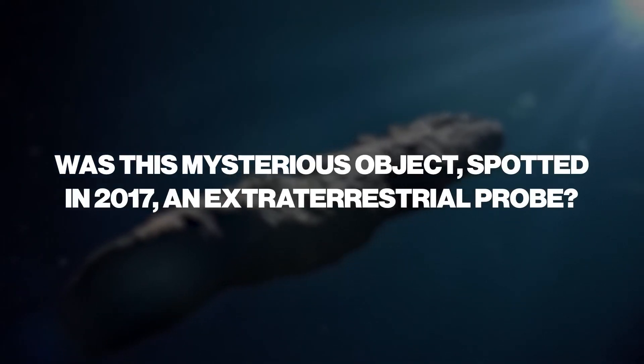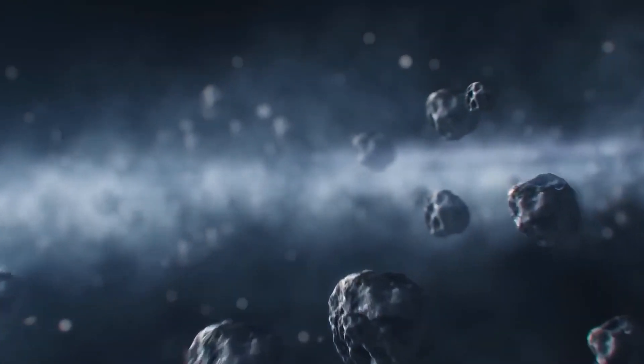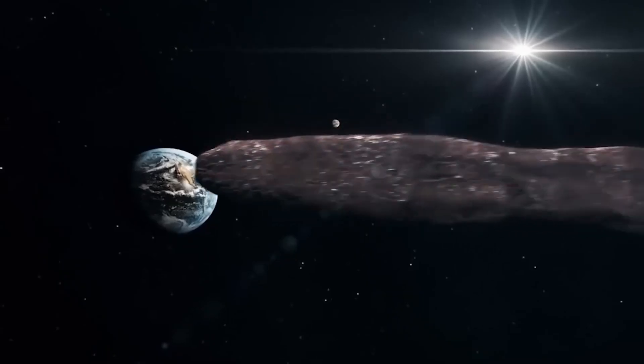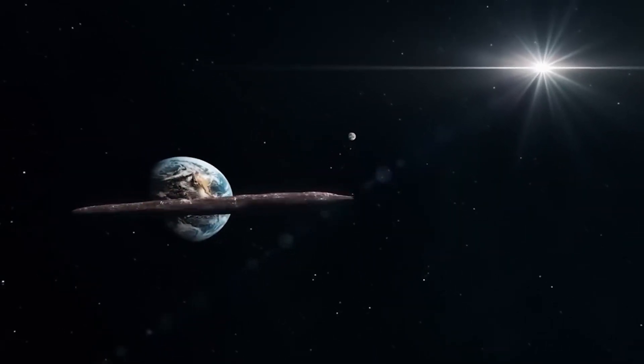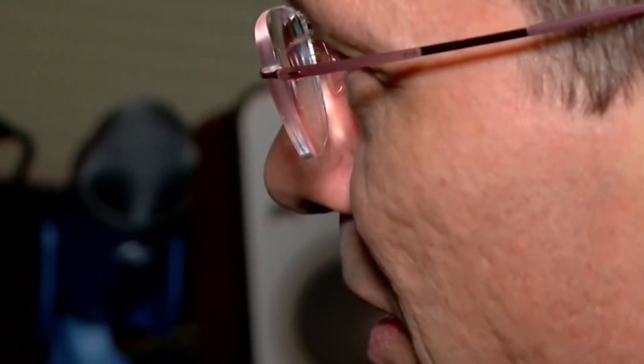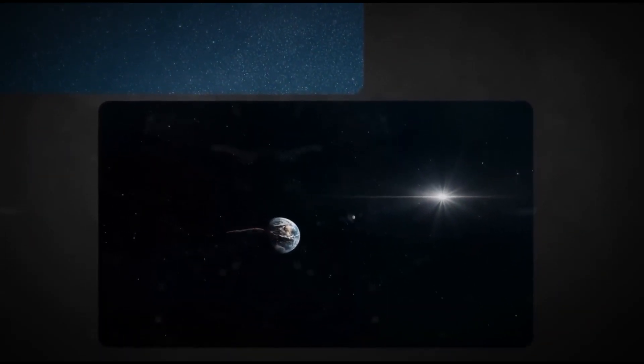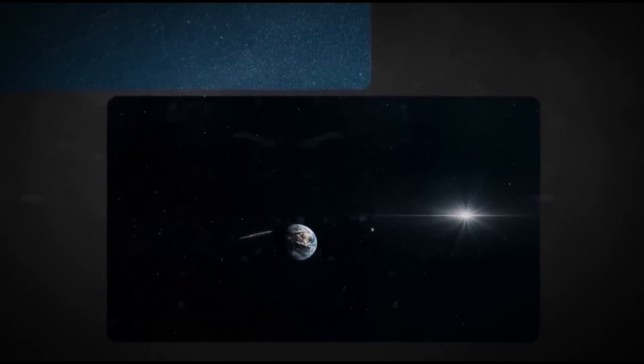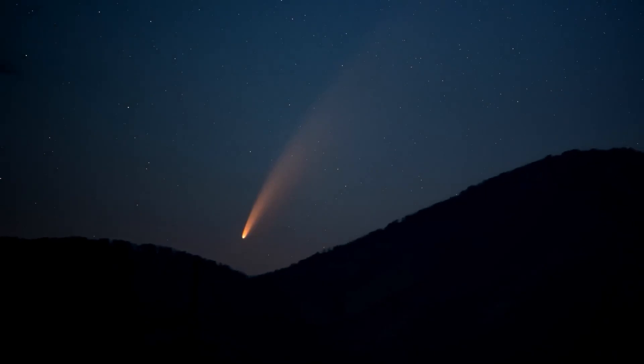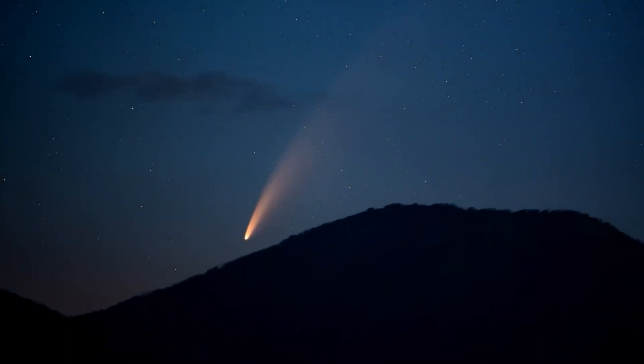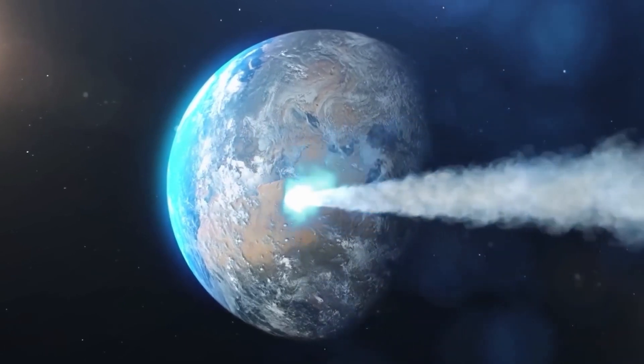But then came a new idea: perhaps it was a piece of a planet from some distant star system. A massive collision between an asteroid and a far-off planet sent bits and pieces hurtling through space. The story of Oumuamua began on a clear night in October 2017 when scientists at the Pan-STARRS-1 observatory in Hawaii first laid eyes on it. This observatory, armed with one of the most powerful digital cameras in the world, is like a guardian scanning the heavens for any signs of trouble heading our way. And thus, Oumuamua was christened, marking the beginning of a captivating cosmic mystery.